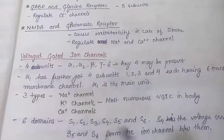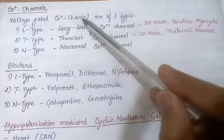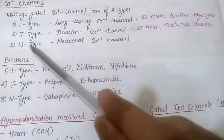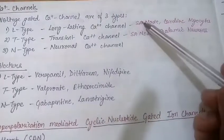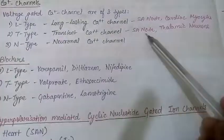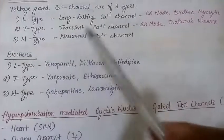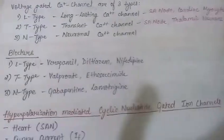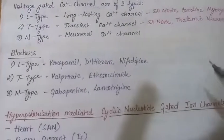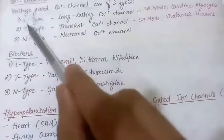The voltage-gated calcium channels are mainly of three types: L-type (long-lasting), T-type (transient), and N-type (neuronal). L-type calcium channels are seen on the SA node, cardiac myocytes, and AV node. T-type transient calcium channels are seen on the SA node and thalamic neurons. N-type, as the name suggests, are neuronal calcium channels.